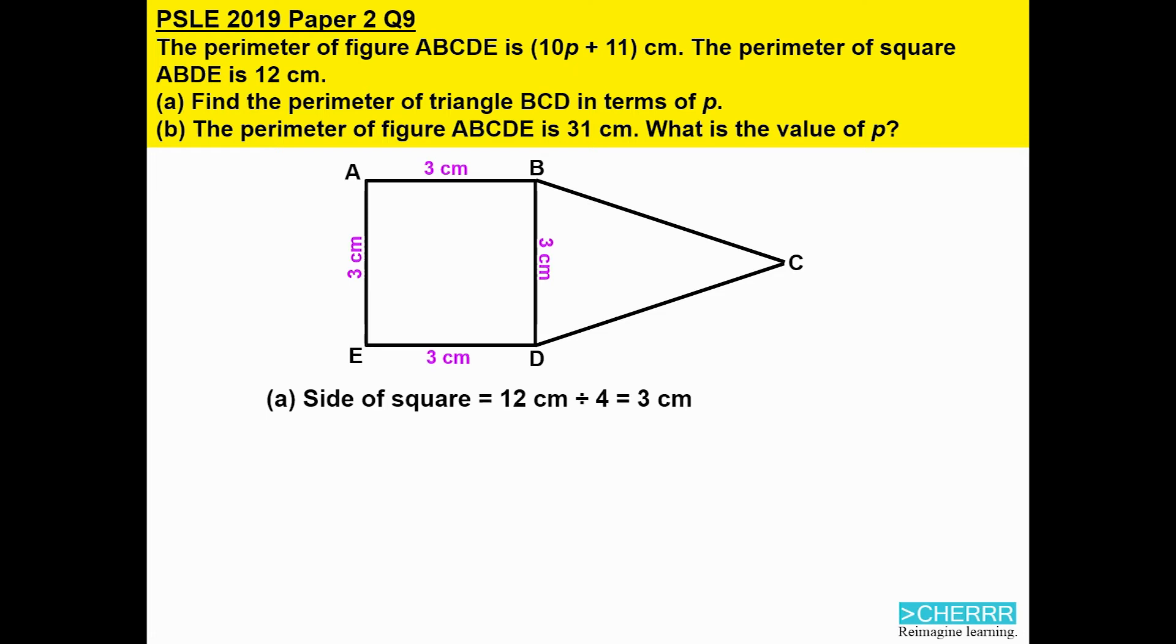We have to be very careful with the term perimeter of figure ABCDE because it means it is the outside shape—it does not include that line BD. We take (10p + 11) and we minus the three sides of the square.